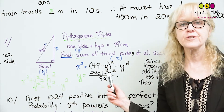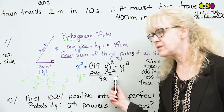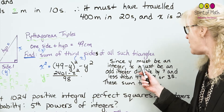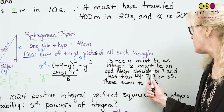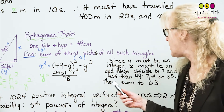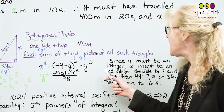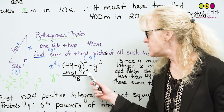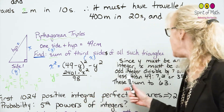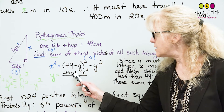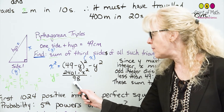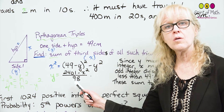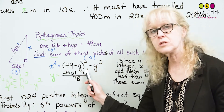The next thing to think about: if y equals this expression, what values of x would hold it true? The solution says y must be an integer, so x must be an odd integer divisible by 7 and less than 49. Why? Well, it has to be an integer because it is a Pythagorean triple — Pythagorean triples are all integers. It must be odd because in order for x² to be properly divisible by 98, it has to be divisible by 2, and 98 is also divisible by 7.